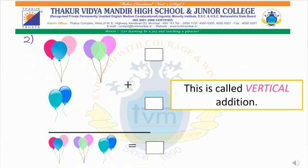Now let us see the next exercise. Six balloons plus two balloons is equal to eight balloons. When we arrange the numbers of an addition sum in a standing line, it is called vertical addition.